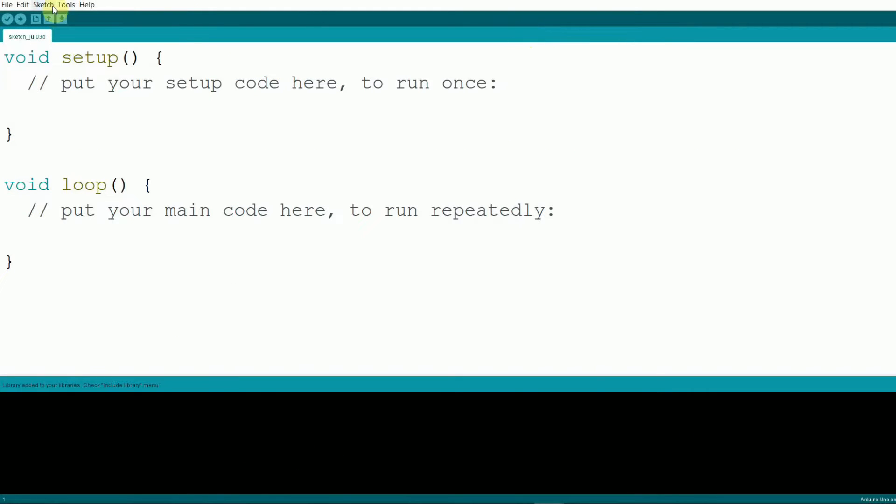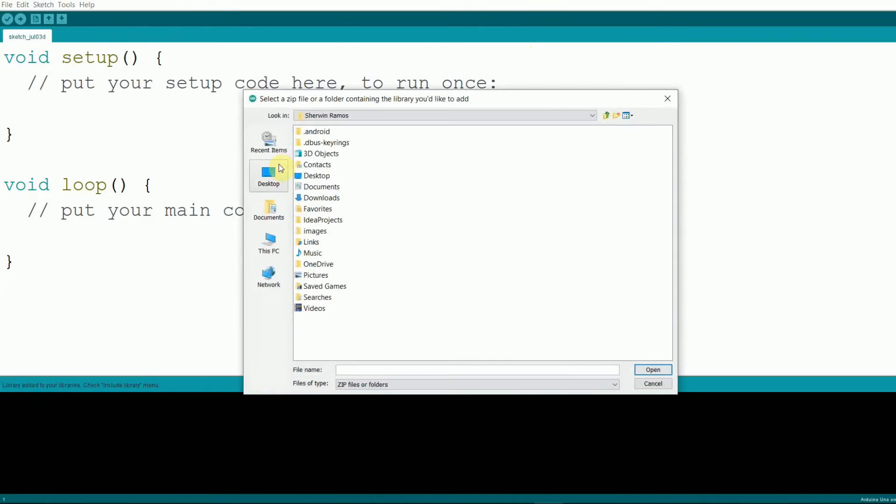After downloading, open your Arduino IDE, go to Sketch, Include Library, Add Zip Library, locate the downloaded zip file, and click Open to install. With the library installed, it's time to write some code.